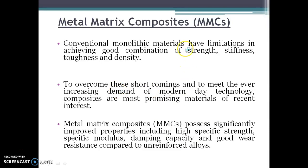Conventional monolithic materials have limitations in achieving a good combination of strength, stiffness, toughness, and density. To overcome these shortcomings and to meet the ever-increasing demands of modern technology, composites are the most promising materials of recent interest. Metal matrix composites offer significantly improved properties including high specific strength, specific modulus, damping efficiency, and better wear resistance compared to unreinforced alloys.